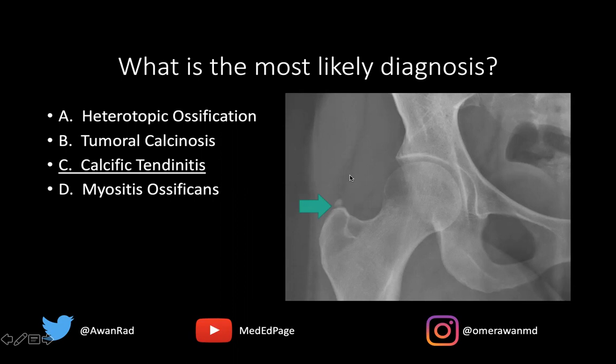This is the site where the gluteus medius and the gluteus minimus tendons insert. When you have globular amorphous calcification adjacent to tendons, bursa, or ligaments, that's usually a case of hydroxyapatite deposition disease, or calcific tendinitis.